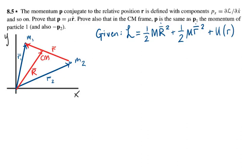Given is the Lagrangian expressed in terms of the position of the center of mass and the relative position of the two masses. The Lagrangian is equal to ½ times the total mass M times the change in position of the center of mass plus ½μ, the reduced mass, which is, remember, equal to m₁m₂ over the total mass M.